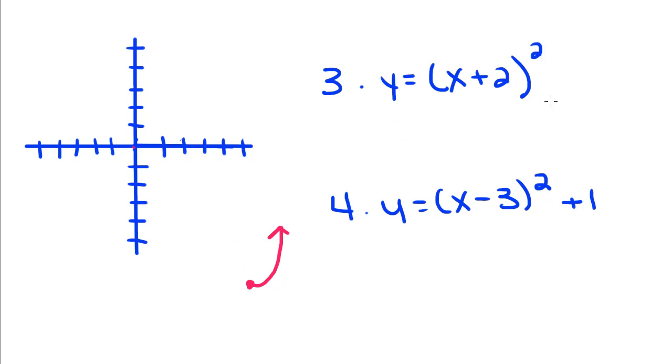Whenever you have a number inside your parentheses, if it's a positive, it's going to shift your graph two to the left. If it's a negative, it's going to shift your graph to the right. So your x intercept, if you set y equals zero, you get zero equals x plus two, x equals negative two.